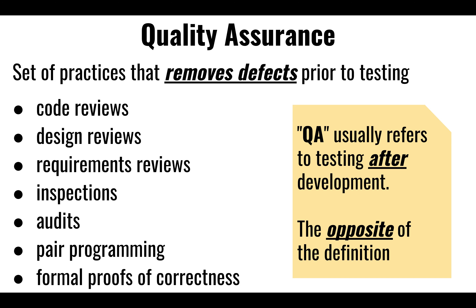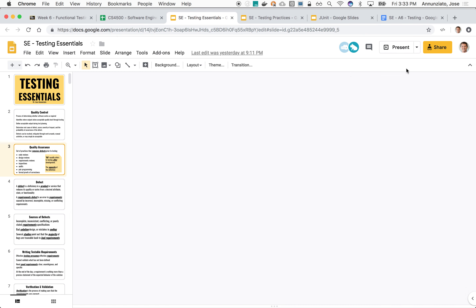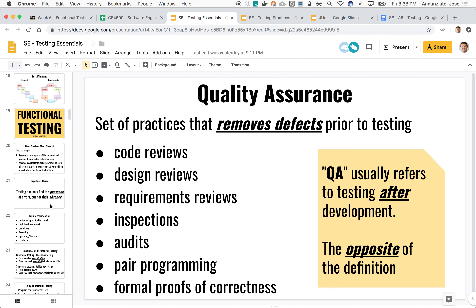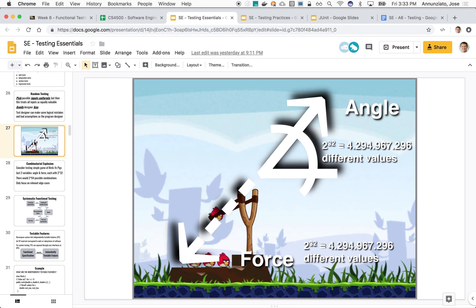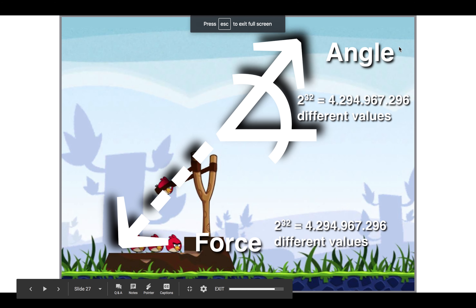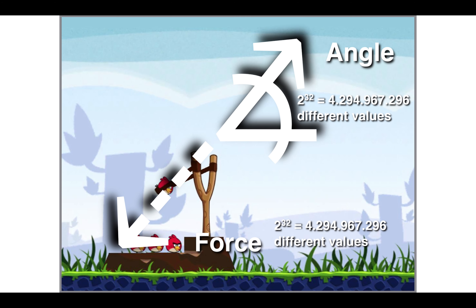Another aspect to point out is that testing is really hard. Even with simple examples — like a simple game where there are only two input variables, how much force you're going to throw a projectile and what angle you're going to throw it at — there are all sorts of combinations. We want confidence that at any combination of these two variables the application behaves correctly, but you can see there's a combinatorial explosion of how many possible inputs to consider — way too many values.